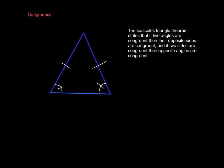The isosceles triangle theorem states that if two angles are congruent, then their opposite sides are congruent, and if two sides are congruent, then their opposite angles are congruent.